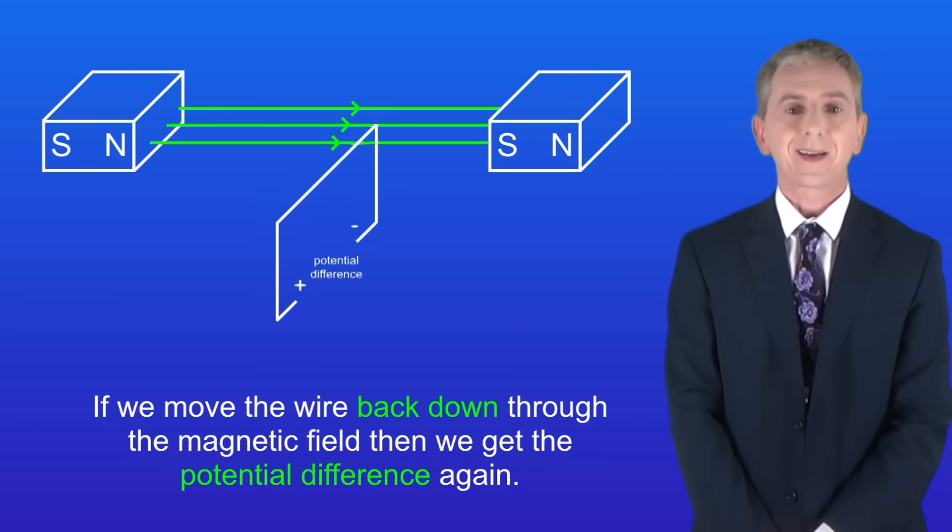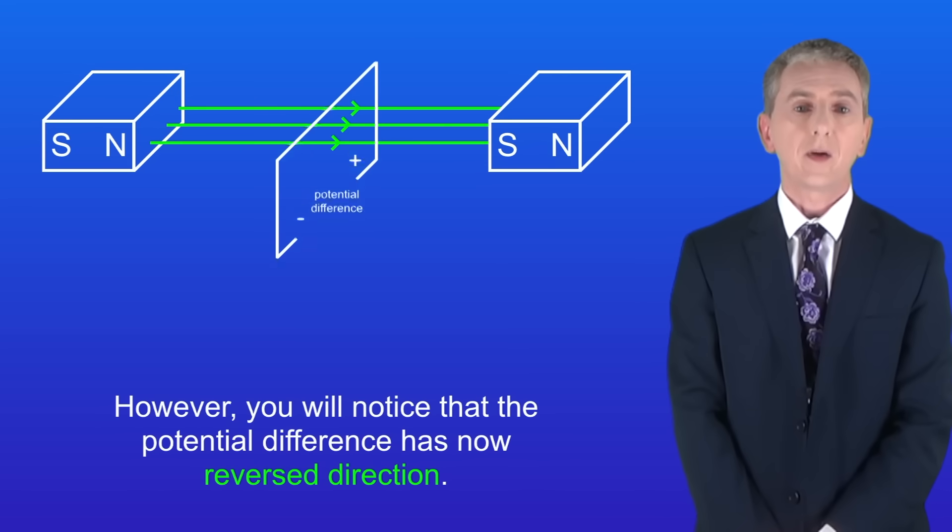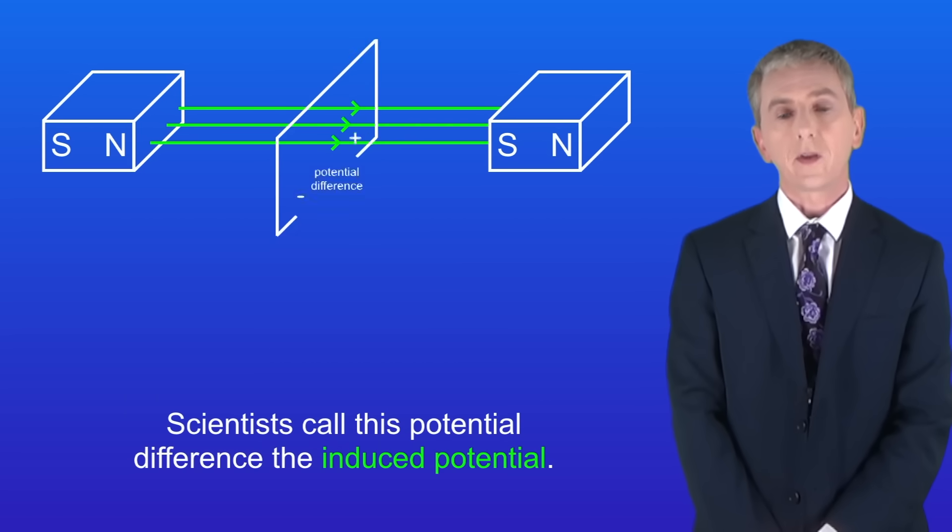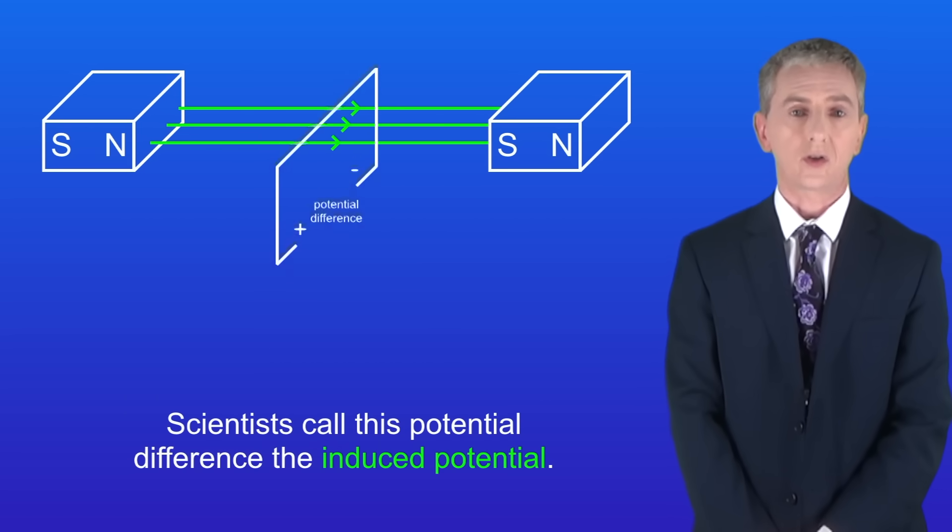If we move the wire back down through the magnetic field, then we get the potential difference again. However, you'll notice that the potential difference has now reversed direction. Scientists call this potential difference the induced potential.